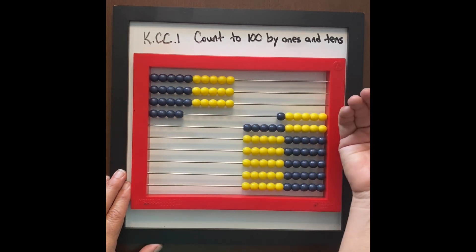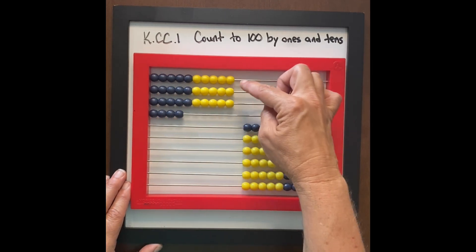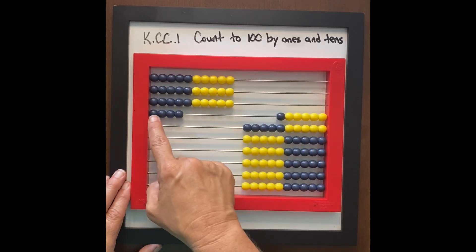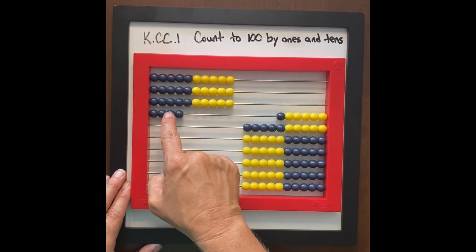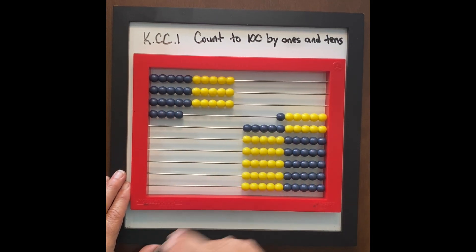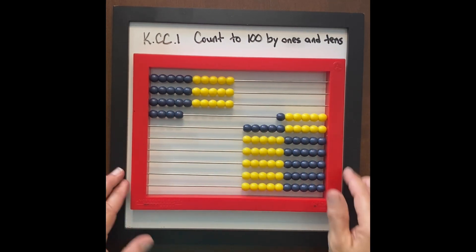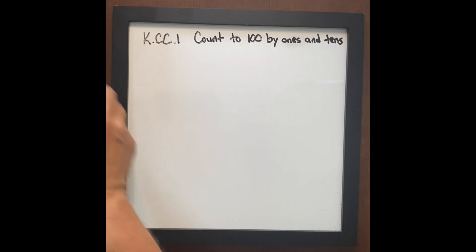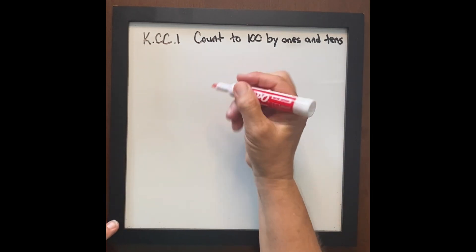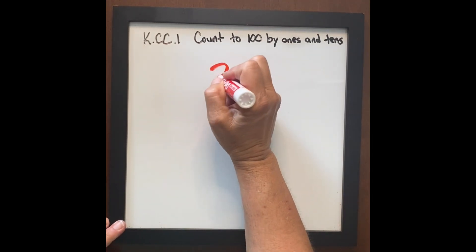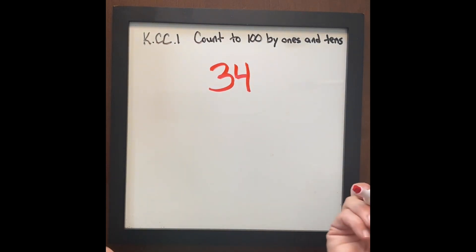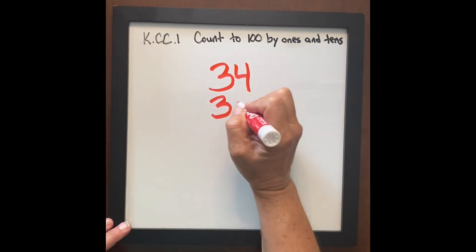You could also count it as 1 ten, 2 tens, 3 tens — then 3 tens 1, 3 tens 2, 3 tens 3, 3 tens 4. We checked it two ways and it is 3 tens 4. Let's write out 3 tens 4, and let's write out 34.